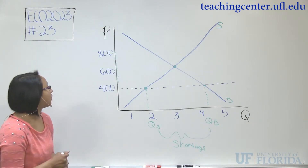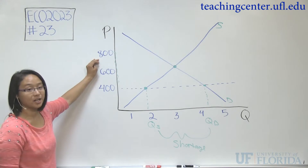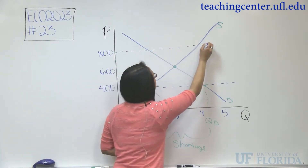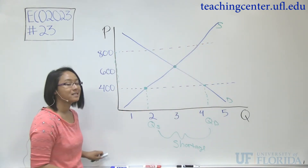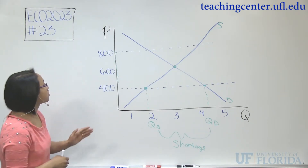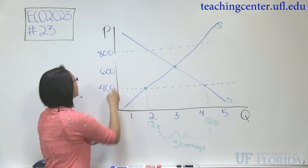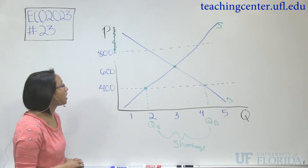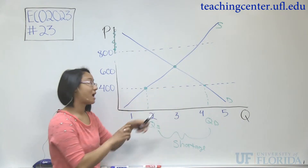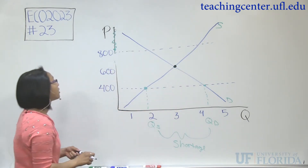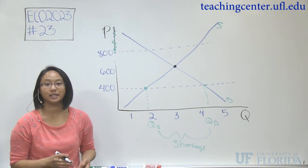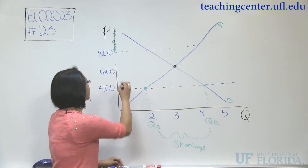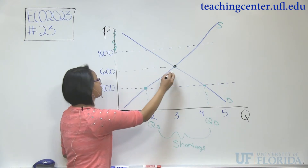The second part of the question moves the price ceiling to $800. We'll set our price at $800. With a price ceiling, you can't go above it, so the area of restriction is now above $800. This is different from the price ceiling at $400 because equilibrium isn't restricted now — we can produce at equilibrium. So because the economy will naturally return to equilibrium, we set our price and quantity at equilibrium, which is a price of $600 and a quantity of 3,000.